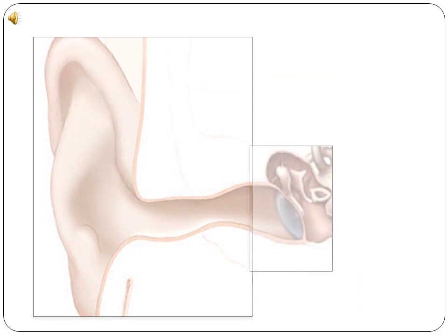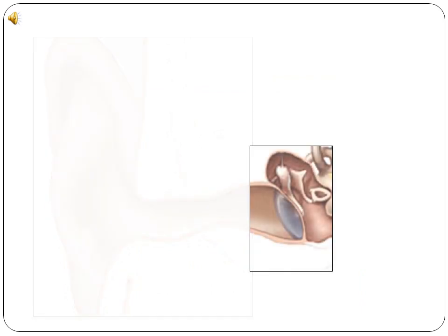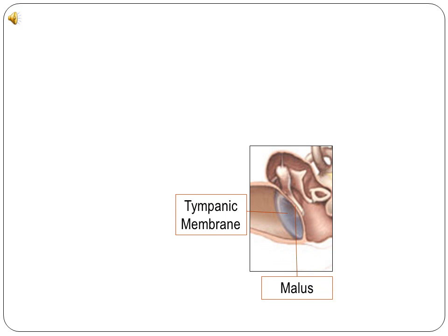The middle ear contains the tympanic membrane, or ear drum, and the three bony auditory ossicles — the malleus, incus, and stapes. These serve to transmit the vibrations created by sound waves to the inner ear.